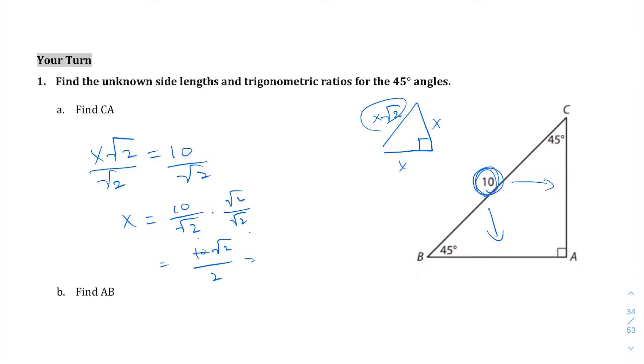In the numerator we have 10 times √2, which we can now simplify because 10 and 2 we can simplify. 2 goes into 10 five times so we're left with 5√2. That means BA and CA are going to equal 5√2.